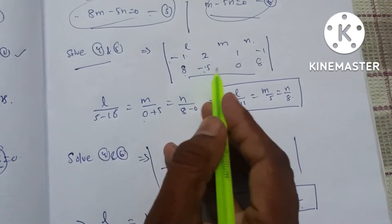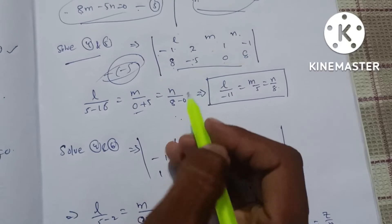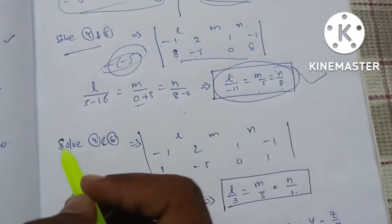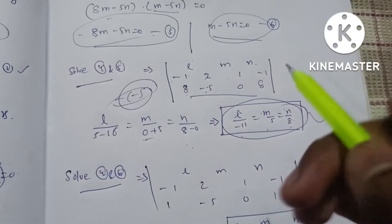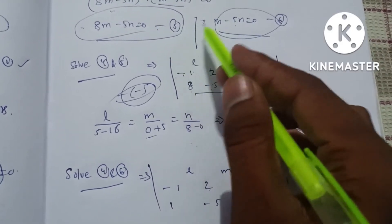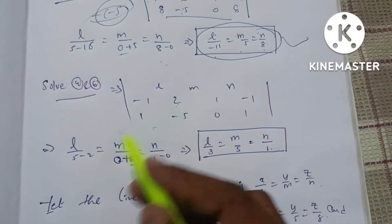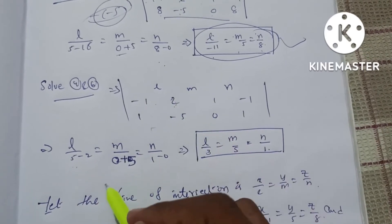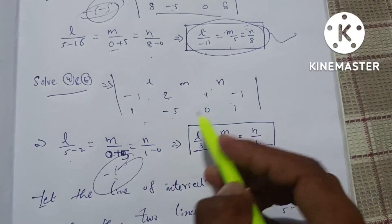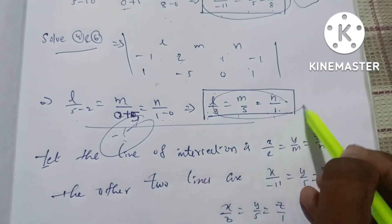Using cross-multiplication on equations 4 and 5: m/[2×0 − (−5)×1] = m/5, n/[1×8 − 0×(−1)] = n/8, l/[−11], giving l/−11 = m/5 = n/8 as the first line. Solving equations 4 and 6: l/3 = m/5 = n/1 as the second line.